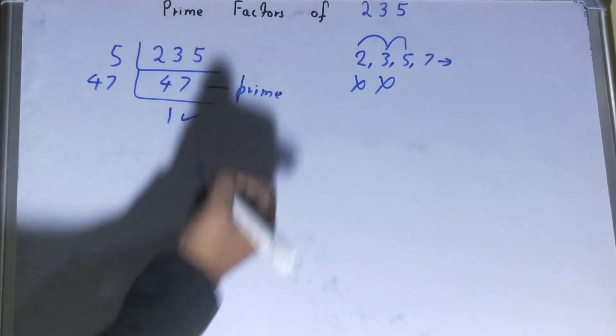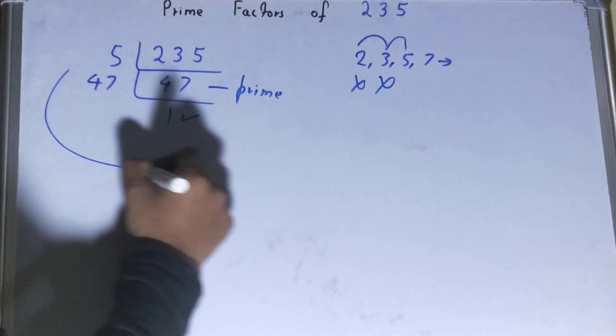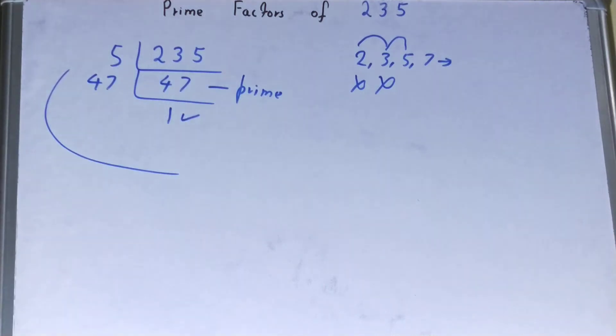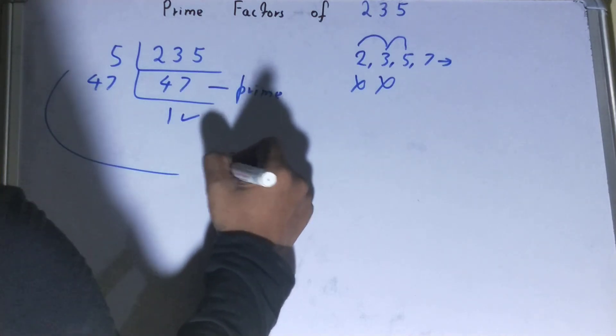You will be left with 1. Once you're left with 1, the work is done. Whatever you have on the left-hand side will be the set of prime factors for the number 235, that is 5 times 47.